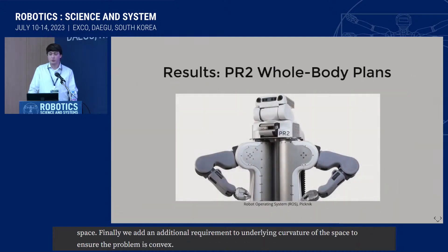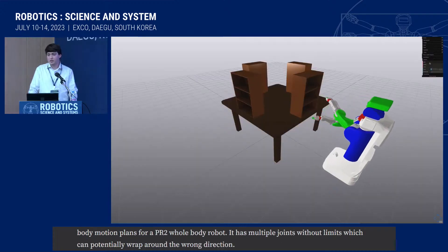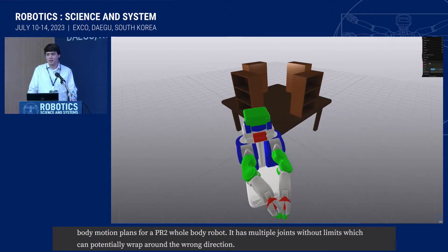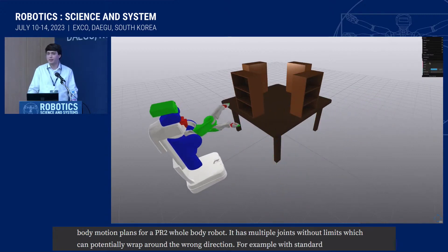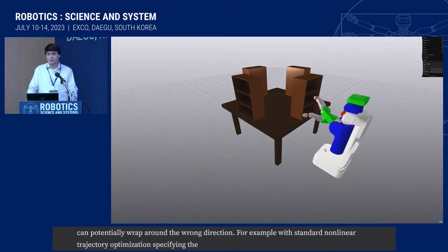Let's put this framework into action and produce whole-body motion plans for a PR2 mobile robot. This robot has a 16-degree of freedom configuration space, including a mobile base and multiple revolute joints without limits, all of which can potentially wrap around in the wrong direction. With standard nonlinear trajectory optimization, specifying the wrong joint angle modulo 2pi can yield suboptimal results, and clearly this is far from optimal.